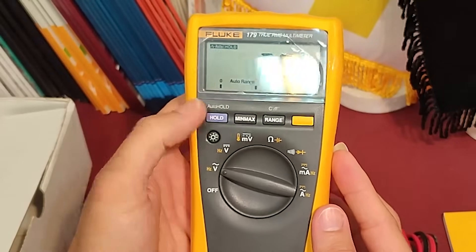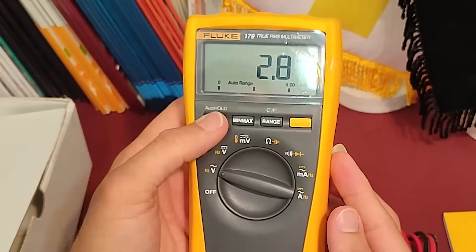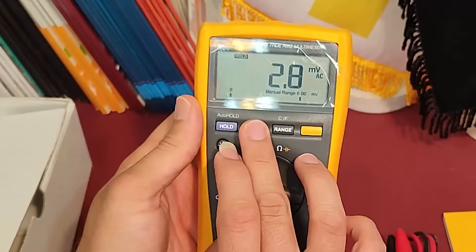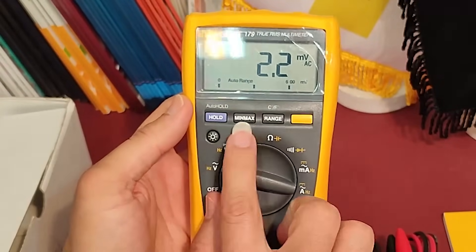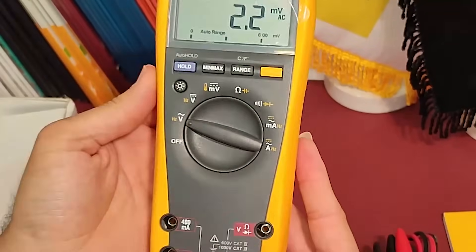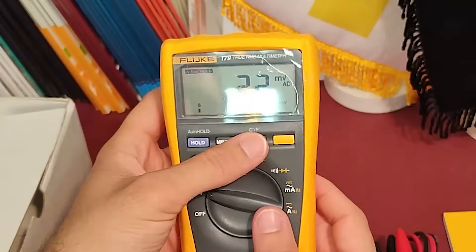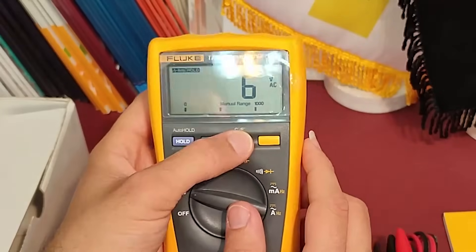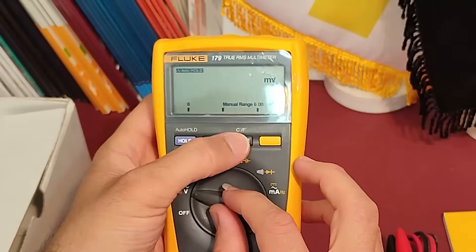The hold button freezes the reading on the display, making it easier to record the measurement. The min or max button allows you to measure the minimum and maximum values of a signal over a period of time. The range button allows you to manually set the range of the measurement. This is useful when you need to measure a specific range of values.